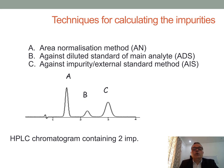Techniques for calculating impurities. First is the Area Normalization method — here I will say AN. Second, against a diluted standard of the main analyte — here I will say ADS. Third, using a corresponding impurity standard — here I will say AIS. This method is also called the external standard method.